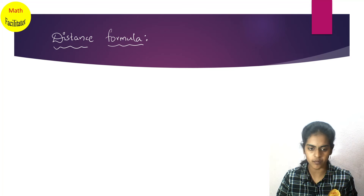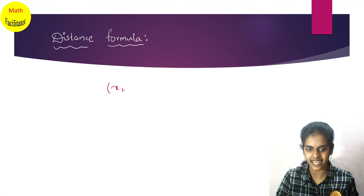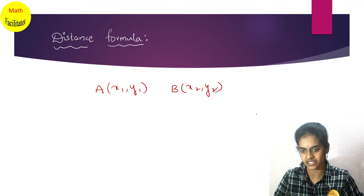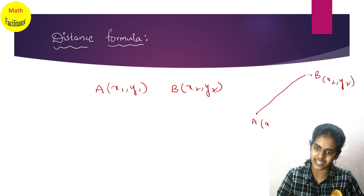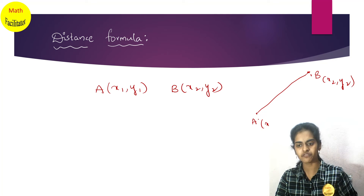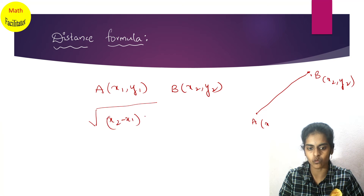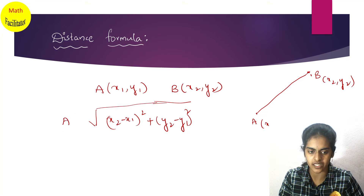Distance means we are going to find the distance between two points. Suppose you have a point A(x1, y1) and another point B(x2, y2). The distance between these two points AB is given by the formula: under root of (x2 minus x1) whole square plus (y2 minus y1) whole square.